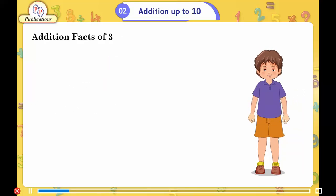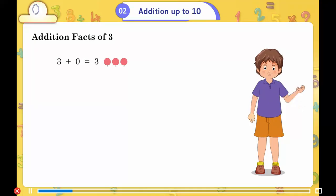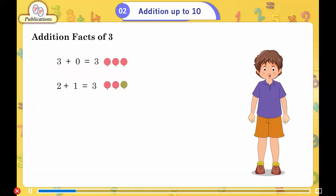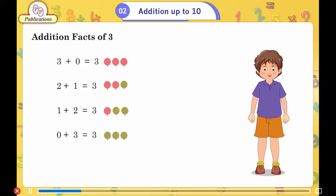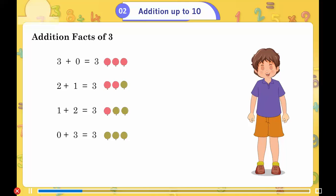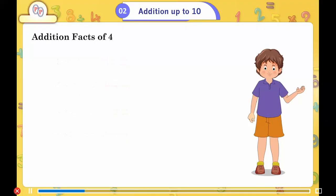Addition facts of 3: 3 plus 0 is equal to 3, 2 plus 1 is equal to 3, 1 plus 2 is equal to 3, 0 plus 3 is equal to 3.